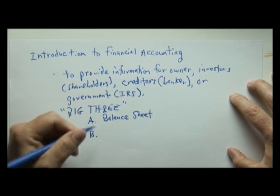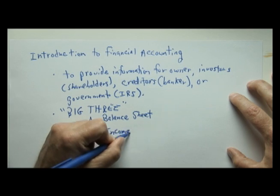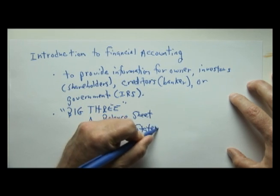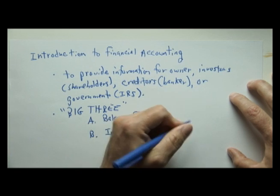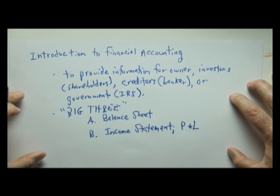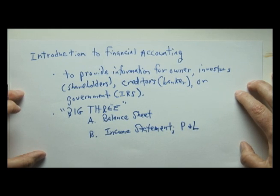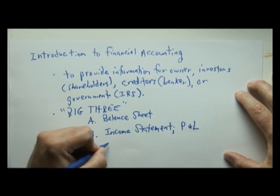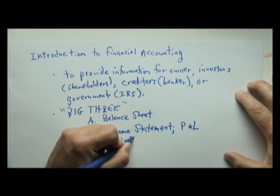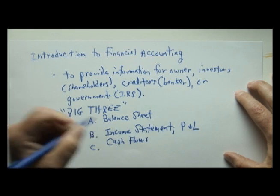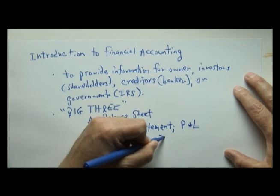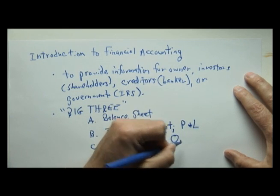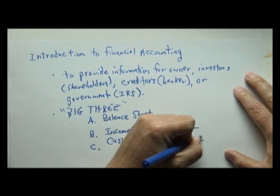The second main financial statement is called the income statement. The income statement measures changes in a business's net worth from one point in time to another. Another name for the income statement is the P&L, which stands for profit and loss. The third main financial statement is called the statement of cash flows, which is merely a summary of how cash changed from one point to another. All cash changes are sorted into operating, financing, and investing activities.